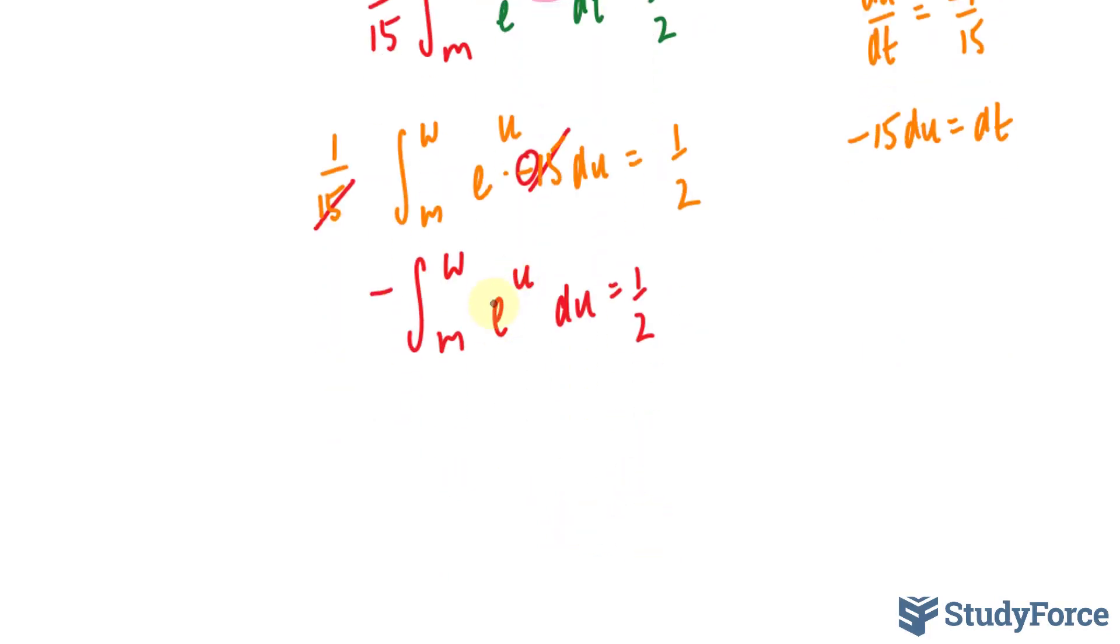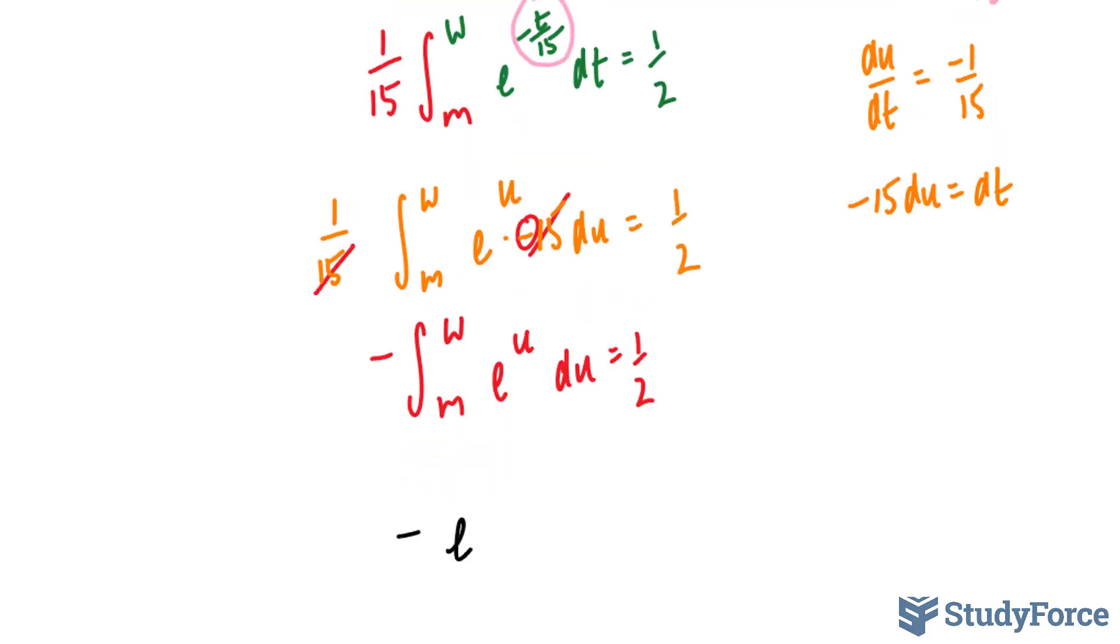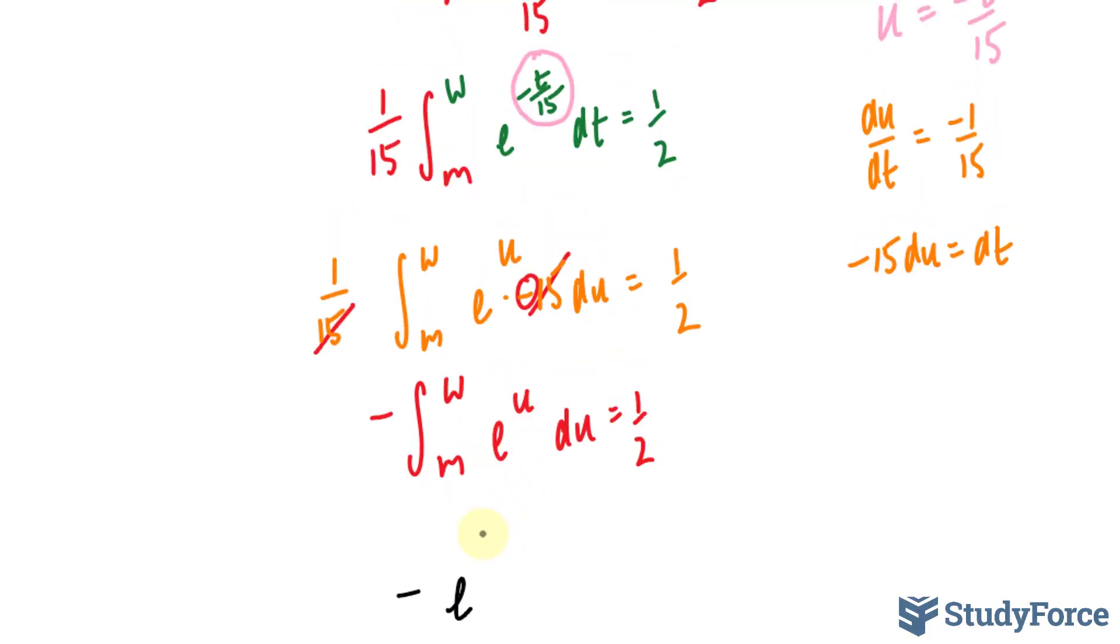Now it's time to integrate e to the power of u. Very simple function to integrate—it's itself. But of course, we'll replace u back with what we set it as: negative e to the power of negative t over 15. Now that we've integrated, we don't need this du anymore. This equals one-half.